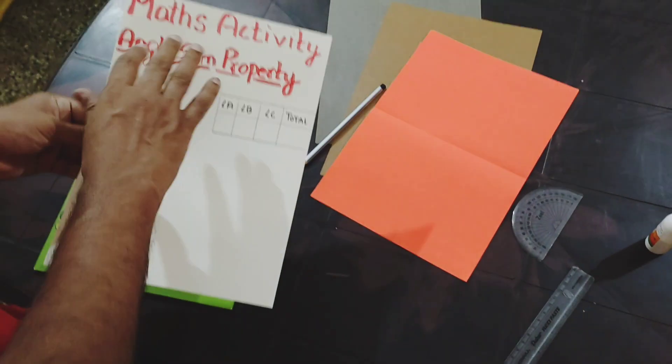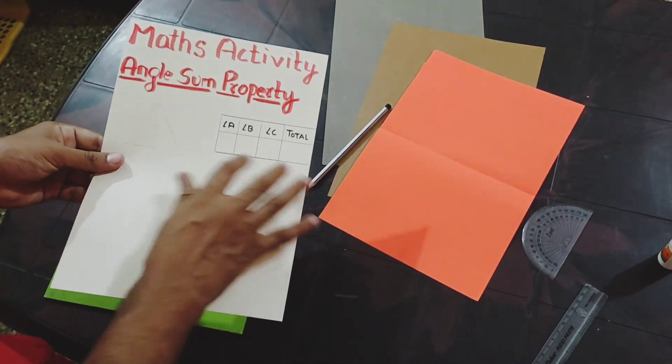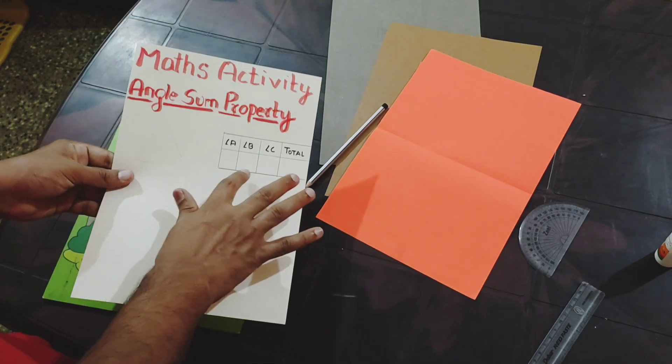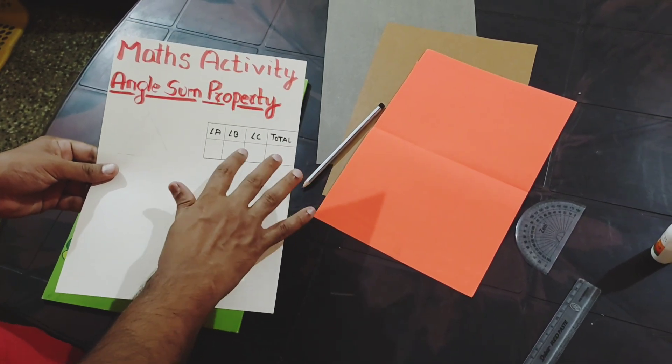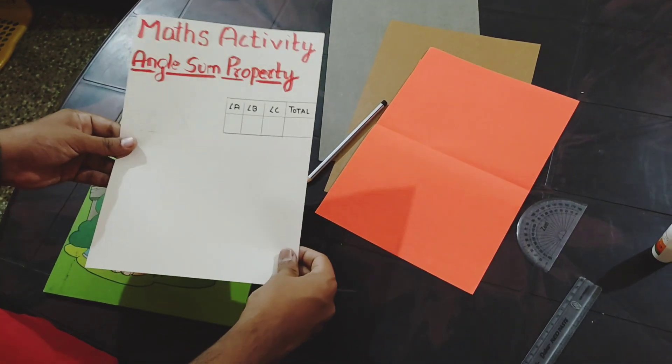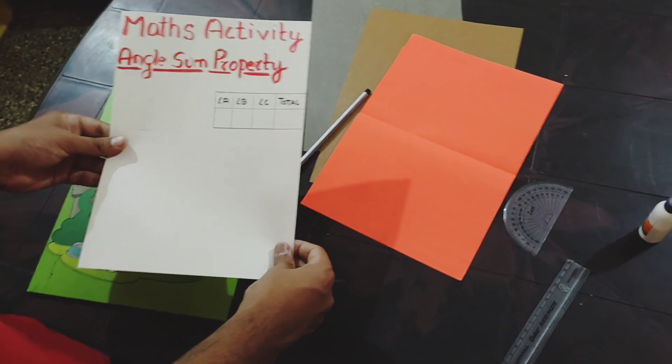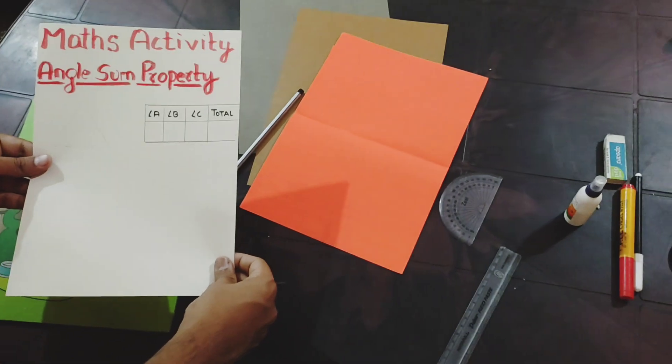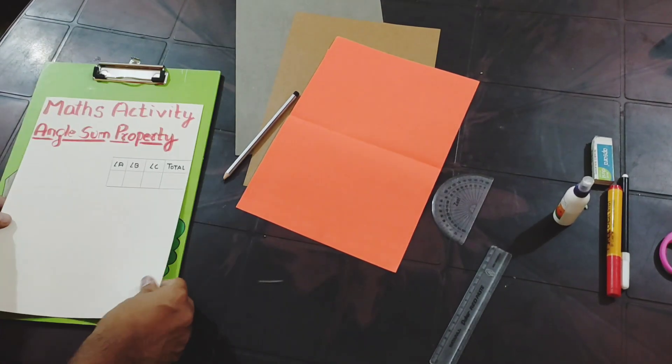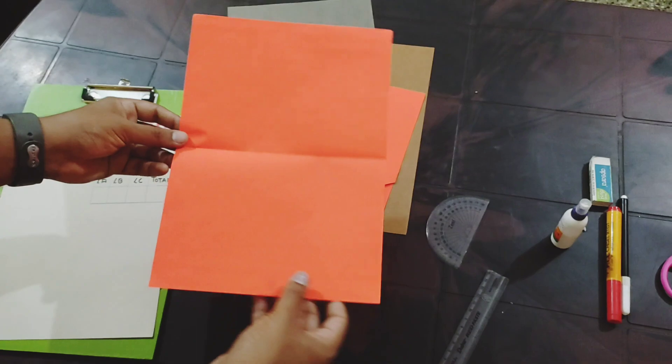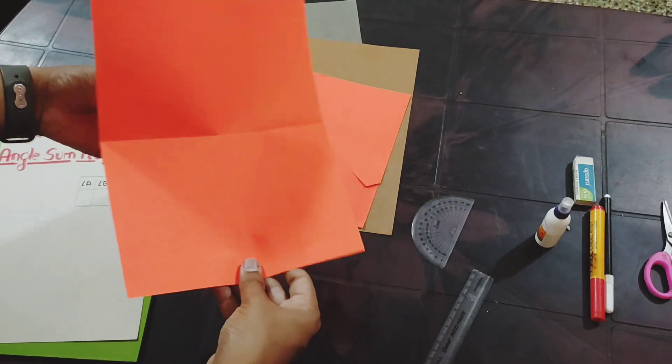First thing that you have to do - I have already done this - take a white paper and write 'Maths Activity: Angle Sum Property'. Write boxes for angle A, angle B, and angle C, and total. You'll get to know why I wrote this later. This paper can be stuck in your activity book or homework.